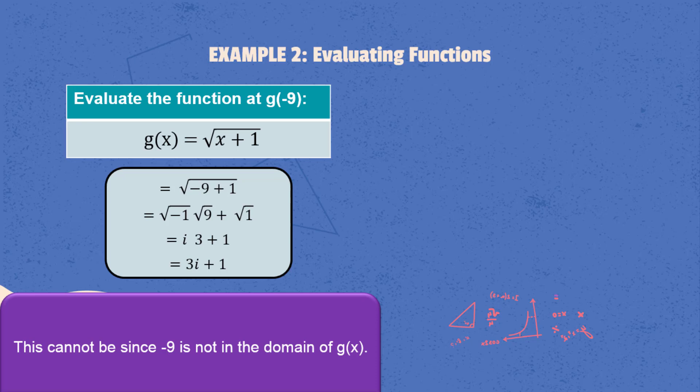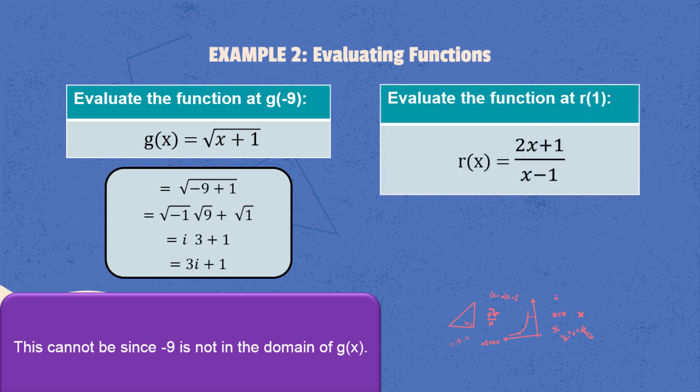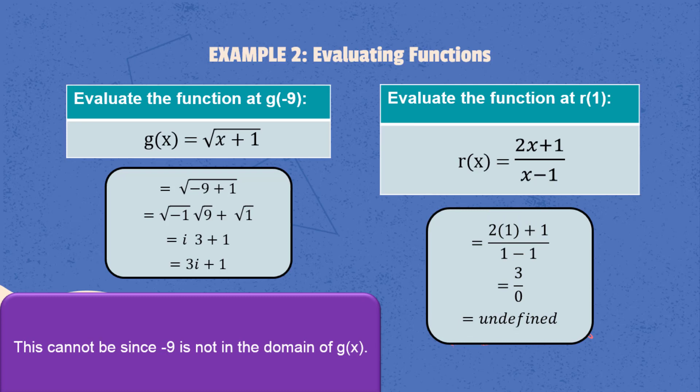How about f of x is equal to 2x plus 1 divided by x minus 1, where x is equal to 1? By replacing all x with the value 1, we will get 3 over 0. And we all know that any number divided by 0 is undefined. This cannot be since obviously, 1 is not in the domain of f of x.